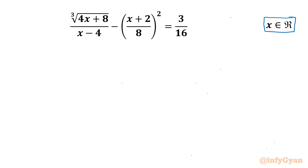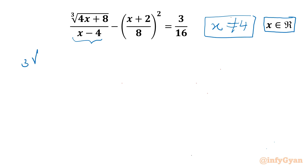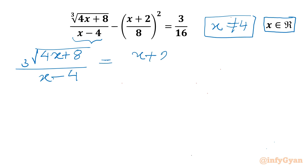Let us get started. This denominator cannot be zero, so I will write x cannot be 4. Now we can write our equation as: cube root of (4x + 8) divided by (x minus 4) equals (x + 2) whole squared divided by 64, plus 3 over 16.